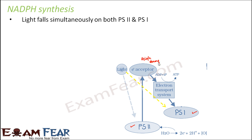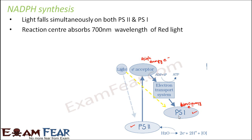The electron had high energy at PS2, but by the time it reached PS1, it became a low energy electron. However, since sunlight is also falling on PS1, this low energy electron also gets excited. PS1 has a reaction center with the chlorophyll P700, which is good at absorbing the 700 nanometer wavelength of light. So when light falls on both PS2 and PS1 simultaneously, PS2 absorbs 680 nanometer wavelength and PS1 absorbs 700 nanometer wavelength — an even greater wavelength, so greater energy can be obtained.